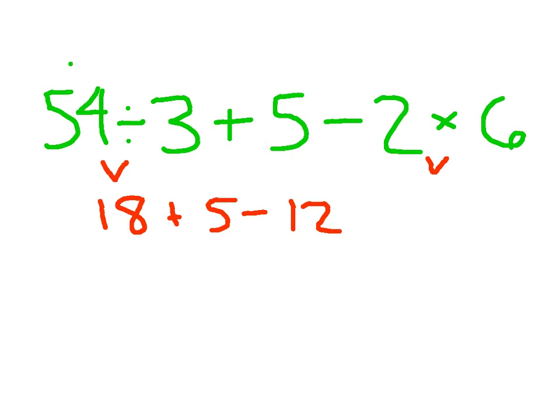At this point, I work with my addition and subtraction problems also from left to right, so 18 plus 5 is 23 minus 12, which is 11. So I have all of this right here. 54 divided by 3 plus 5 minus 2 times 6, which evaluates to 11.